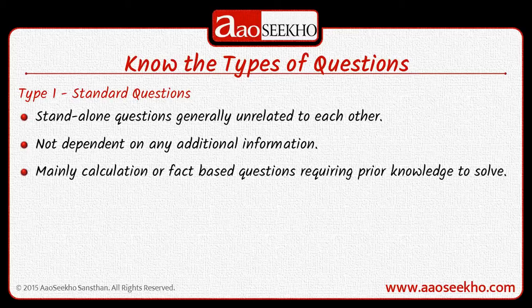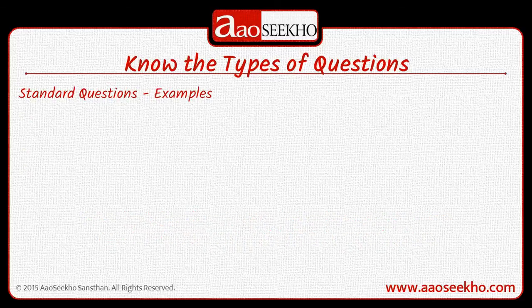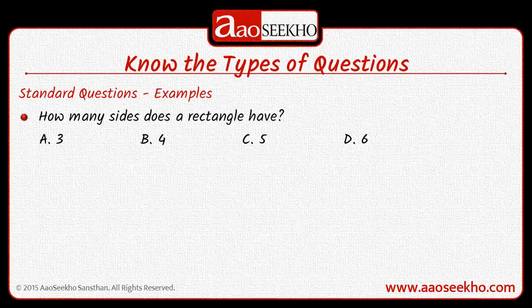A good tip is that generally it doesn't matter in which order we attempt these questions in an exam, so we can use this fact to our advantage. Let's take an example. How many sides does a rectangle have? The options are 3, 4, 5 and 6, and we very easily can answer this — the right answer is B, i.e. 4 sides.